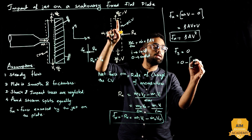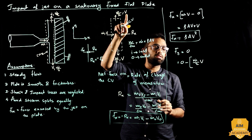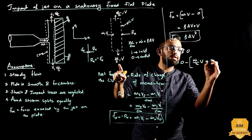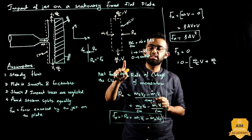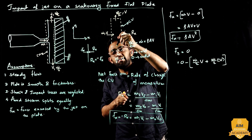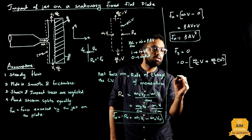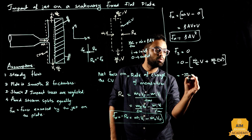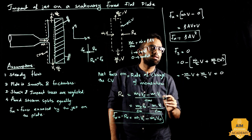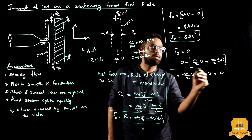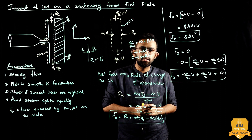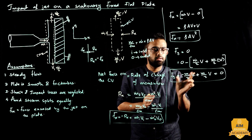For the y-direction: the m/2 mass exits with velocity v upward, and the other m/2 exits with velocity v downward — one is positive y-direction and the other is negative y-direction. So the bracket gives minus m/2 times v plus m/2 times v, which equals zero. Therefore Fy equals zero. So we have no force in the y-direction.